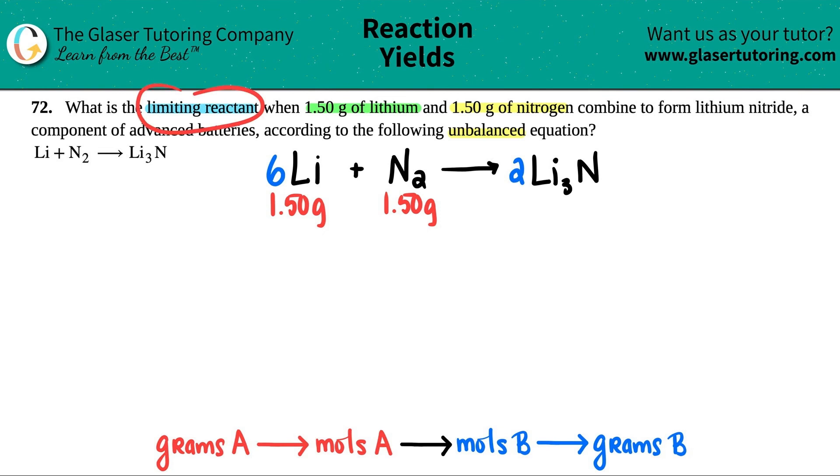Now I love these types of questions because it's all systematized, and all we got to do is just make a chart. Whenever they ask for the limiting reagent or the limiting reactant, it means the same thing, you're going to draw a line down the two reactants. Remember, reactants are always the left side of the yield sign.